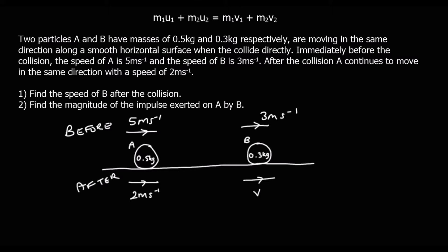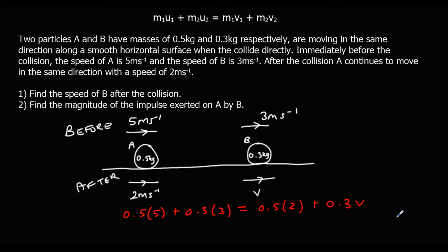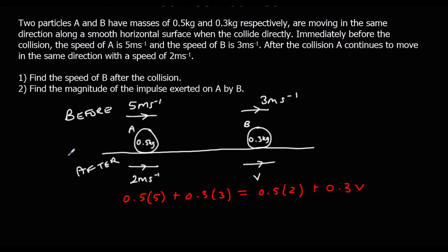We're going to use our formula. M1U1 — calling A particle 1 — is 0.5 times 5, plus M2U2, which is 0.3 times 3, equals M1V1, which is 0.5 times 2, plus M2V2, which is 0.3 times V.